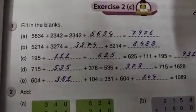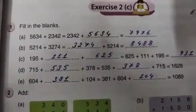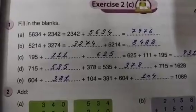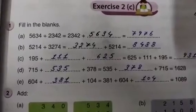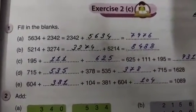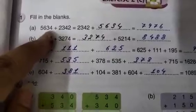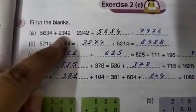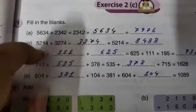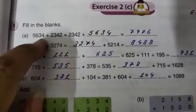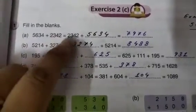See, fill in the blanks. 5,634 plus 2,342. That means 2,342. So, the first one is 5,634. Second one is 2,342. See, equal. Equal 5,634 plus 2,342. Equal. Now, this will come in the first.